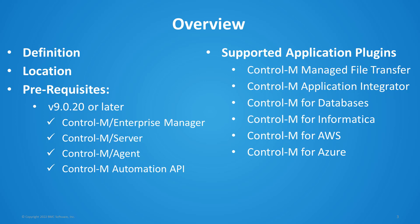Prerequisites to manage them using Control-M Automation API: you will need Control-M 9.20 or later, including the Enterprise Manager, Control-M Server, Control-M Agent, and also Control-M Automation API 9.20 or later. Centralized connection profiles support Managed File Transfer, Application Integrator, Control-M for Databases, Control-M for Informatica, Control-M for AWS, and Control-M for Azure.